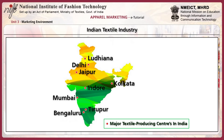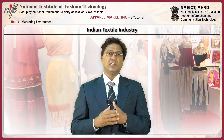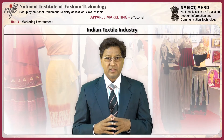Apparel manufacturing in India comprises two distinct segments: one catering to exports and the other to domestic requirements. Major production hubs include Tirupur, Ludhiana, Bengaluru, Delhi, Mumbai, Kolkata, Jaipur, and Indore.